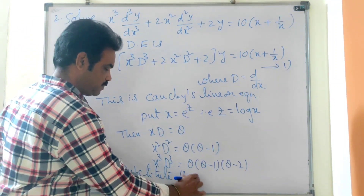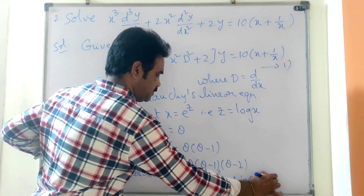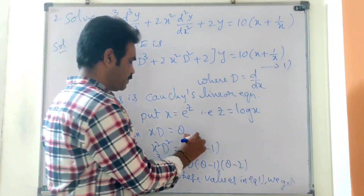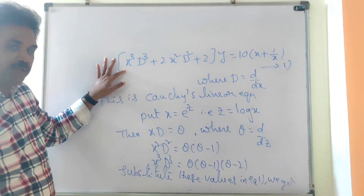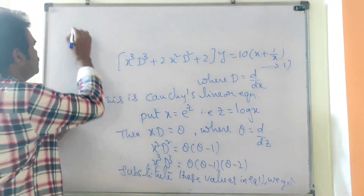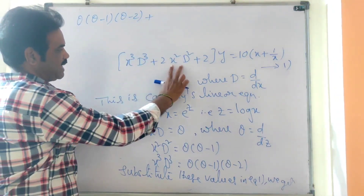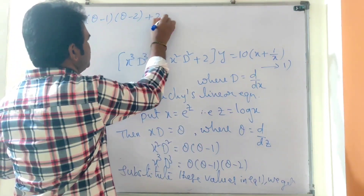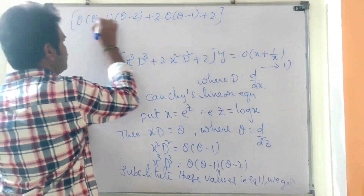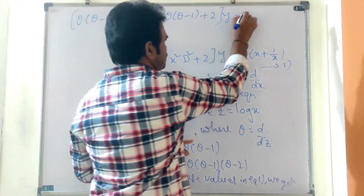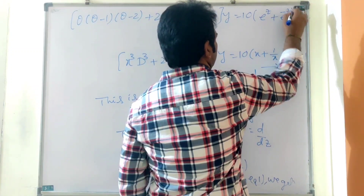Substituting these values in equation 1, where θ = d/dz: θ(θ−1)(θ−2) + 2θ(θ−1) + 2, all into y = 10(e^z + e^(−z)). Since x = e^z, we have x = e^z and 1/x = e^(−z).